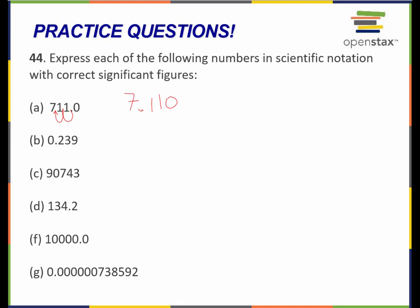In my scientific notation, I should keep all of the numbers that are significant. When I look at my measurement, 711.0, all of those numbers are significant. Because even though this zero comes at the end and it's a trailing zero, since there's a decimal point, that trailing zero becomes significant. It's whether or not there's a decimal point that determines if a trailing zero is significant or not.